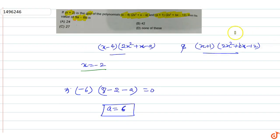5a-6b equals 42. Option B is the correct option. This is the answer for this question.